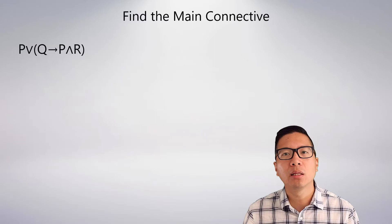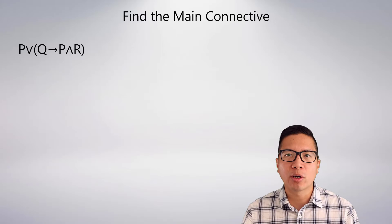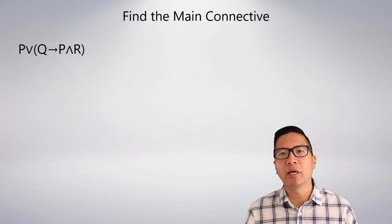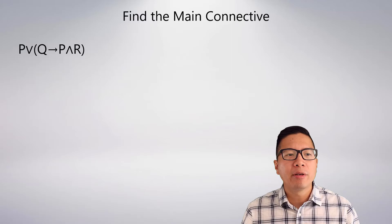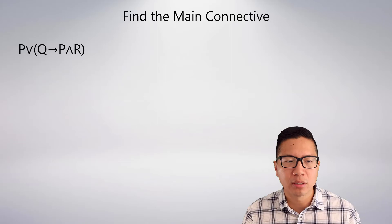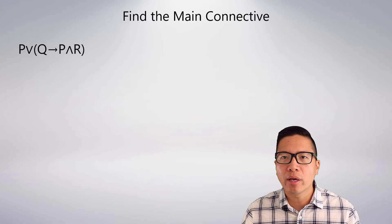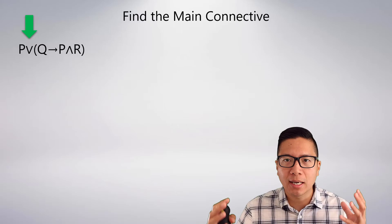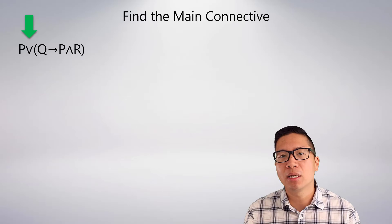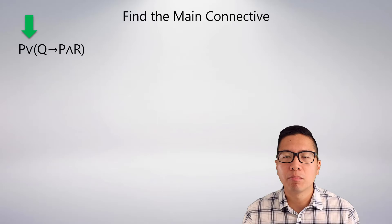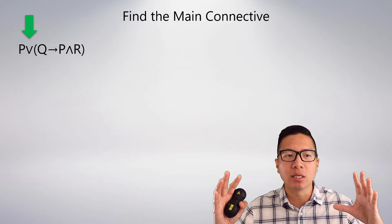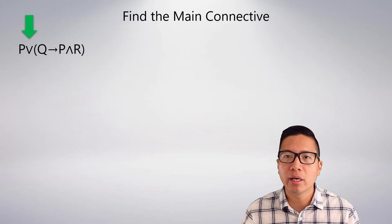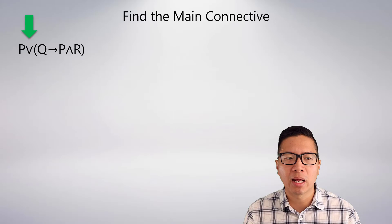Let's do some examples of finding main connectives. For the first sentence, three possible candidates are the OR, the ARROW, or the AND. The ARROW and the AND are bound within parentheses, so they're at a lower level than the OR — they cannot reach out to capture the P as well. So the only option for what ties everything together is the OR. This statement is an OR statement. Within the parentheses, the ARROW and AND are at the same level, and applying the hierarchy tells us the main connective within the parentheses is the ARROW.